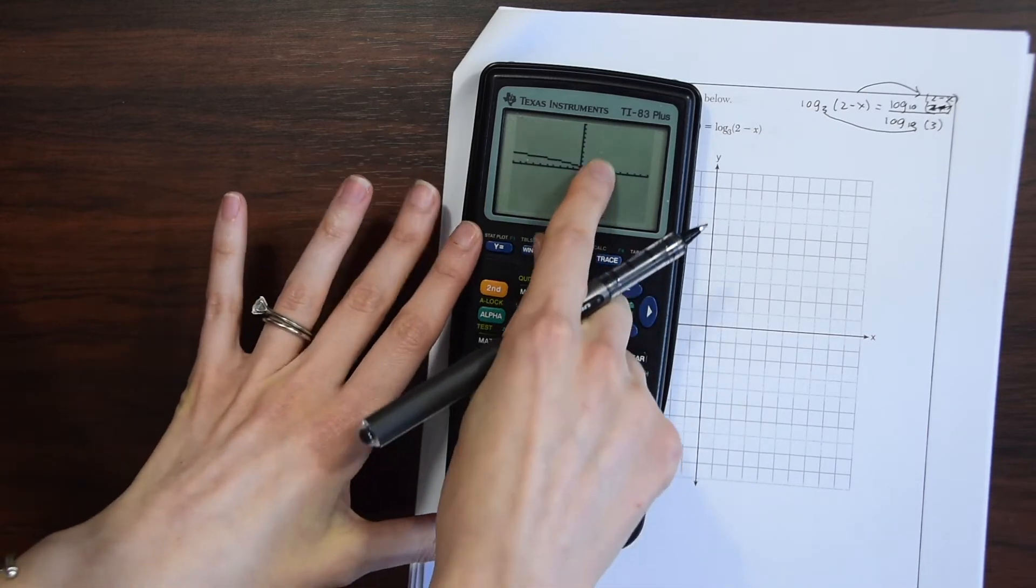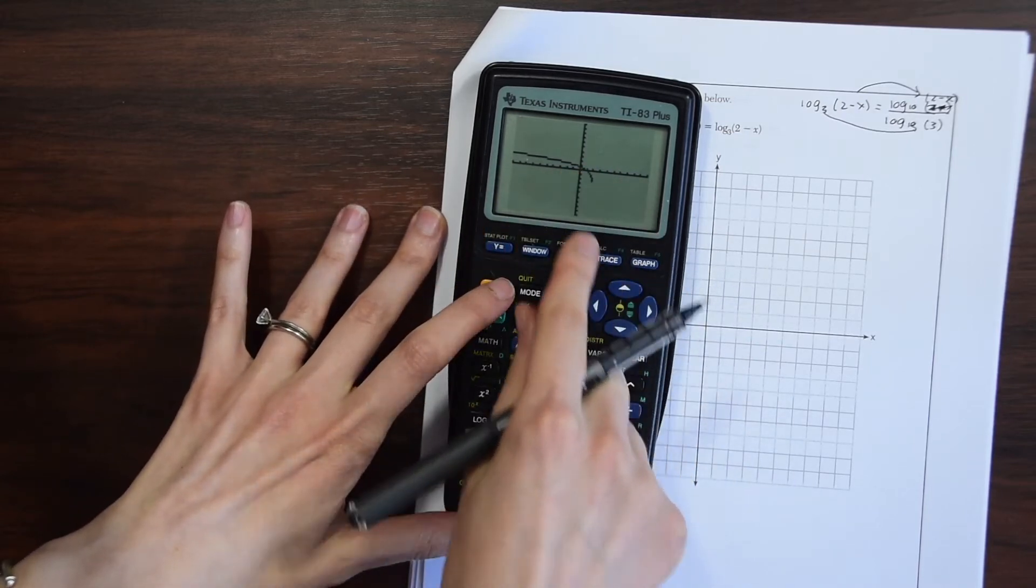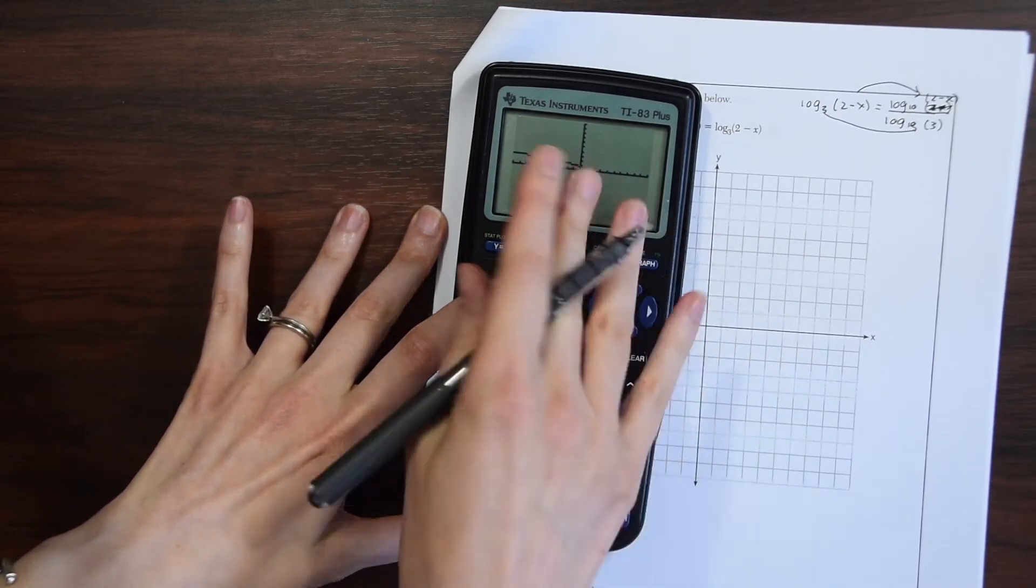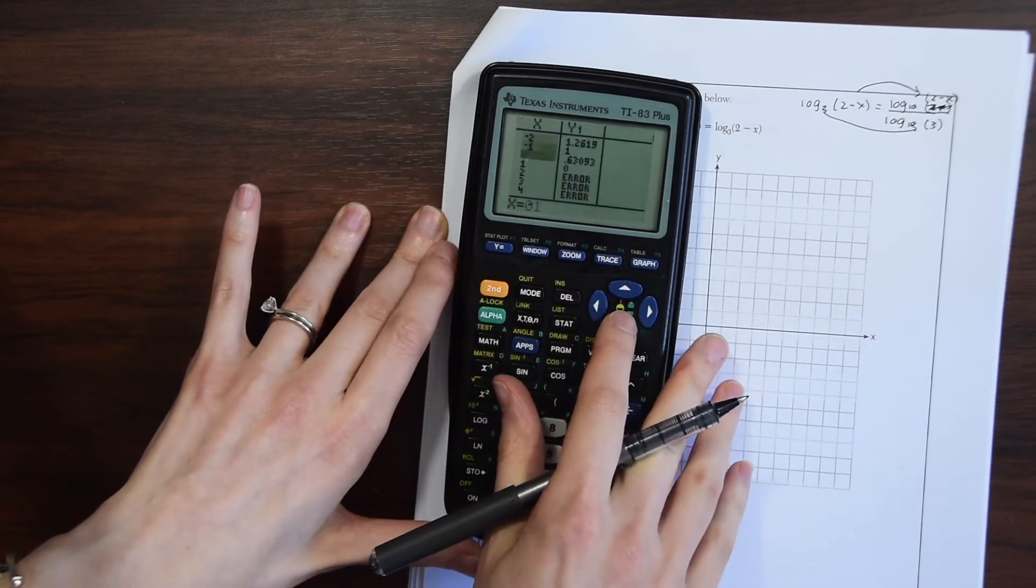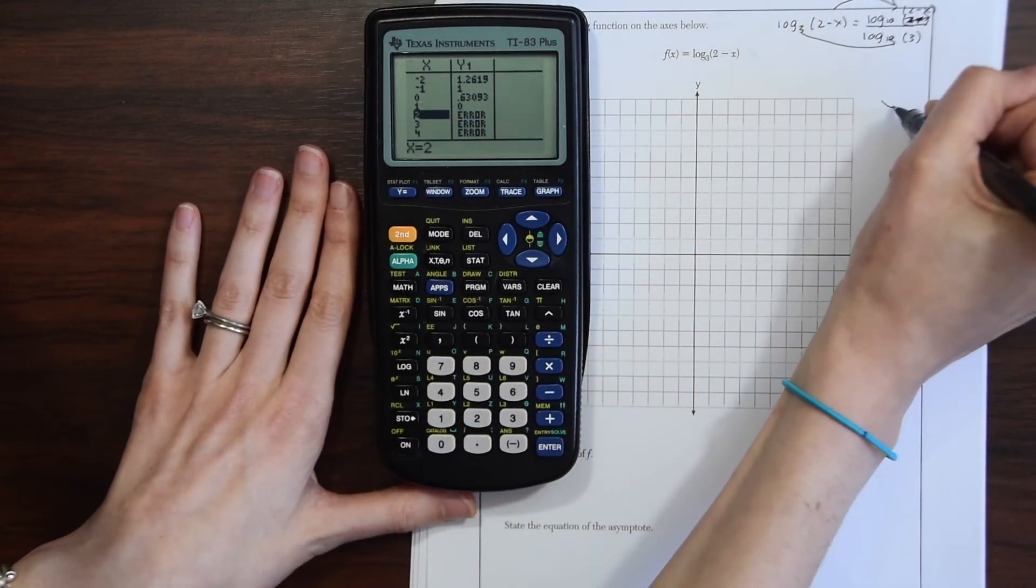Notice we have an asymptote at x = 2 because there are no values that go any further. Let's go to the table and look at that to get a clear picture. If you see the table, let's write the table over here.